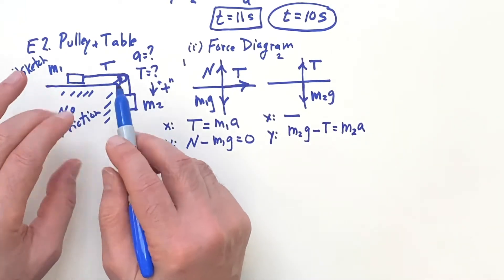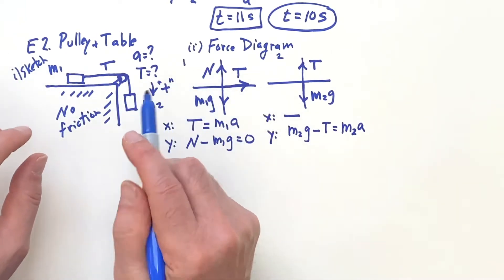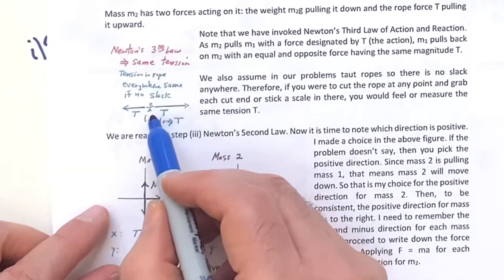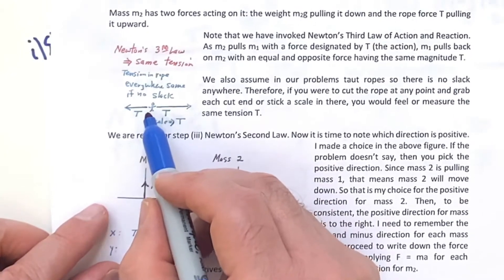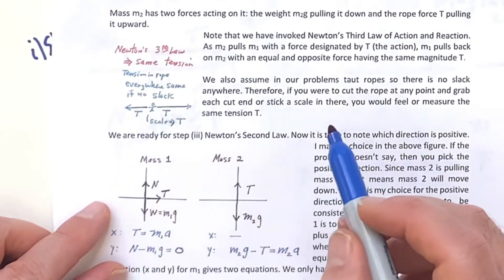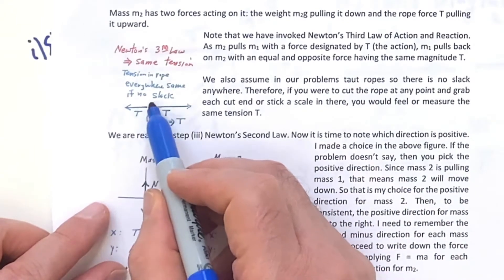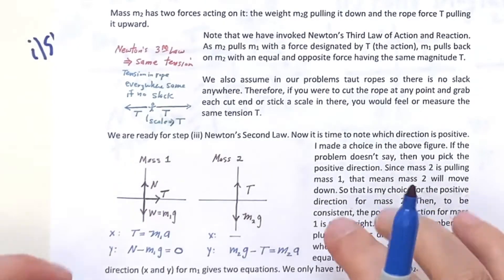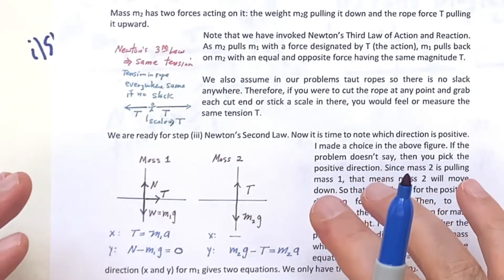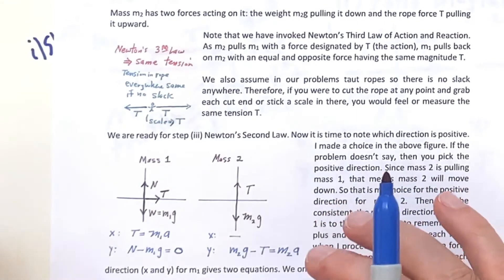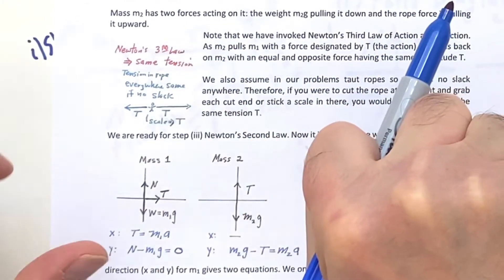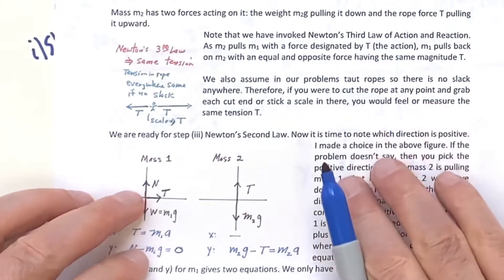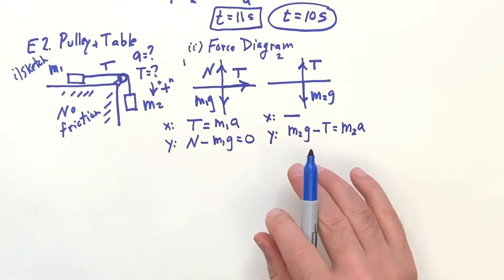Notice that when you have a rope that's taut and there's no slack, you can anywhere put a scale anywhere in there and you're going to get the same result, the same tension. So if you put a scale there, like you're stretching it, you get the T, you measure the T. You can think of it like the one T is pulling a square scale, but the other T is like holding the scale in place so you can get a reading.